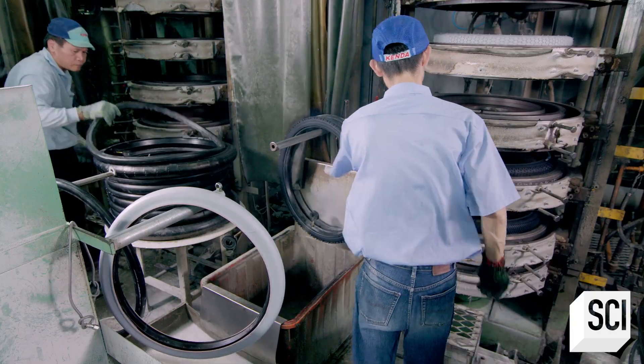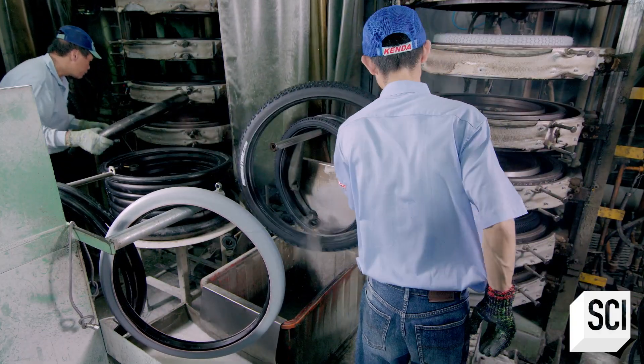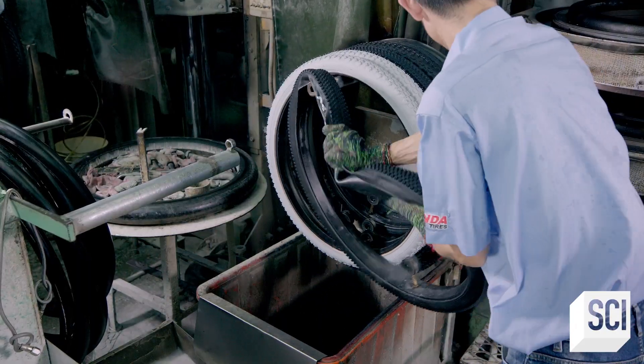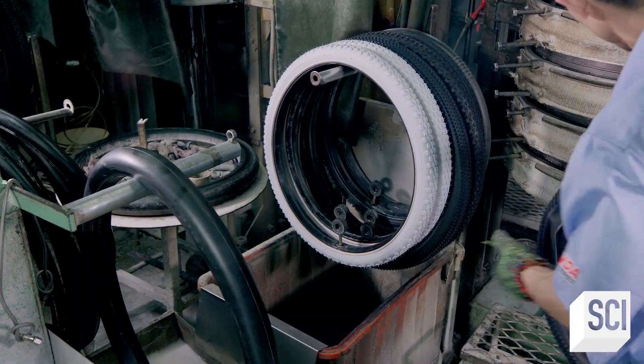Like a big waffle iron, this mold has cooked and formed the mountain bike tire. The tire is then placed on a rack to cool.